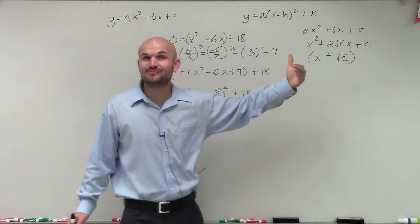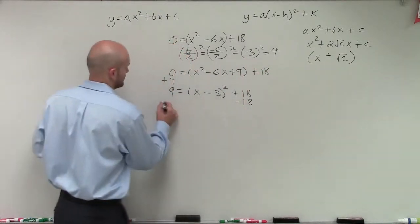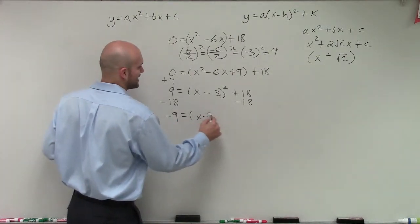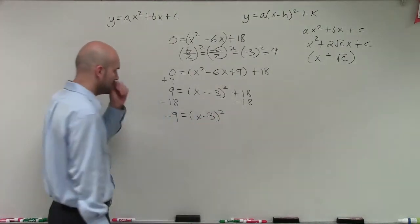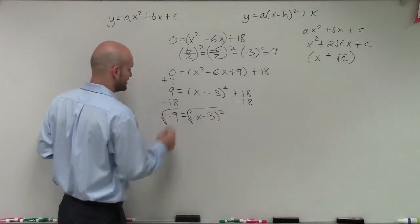So therefore, I'll have a negative 9 equals x minus 3 squared. Now, I can apply my inverse operation. So I'll take the square root, take the square root.